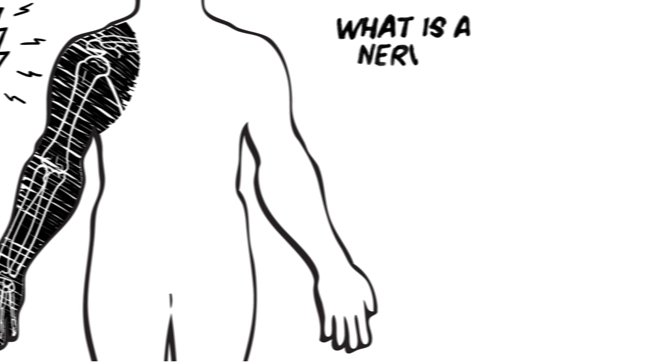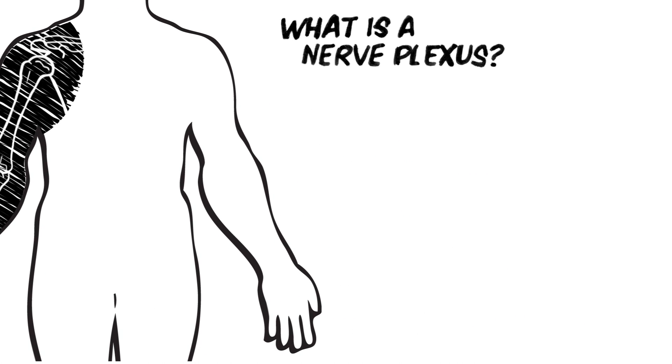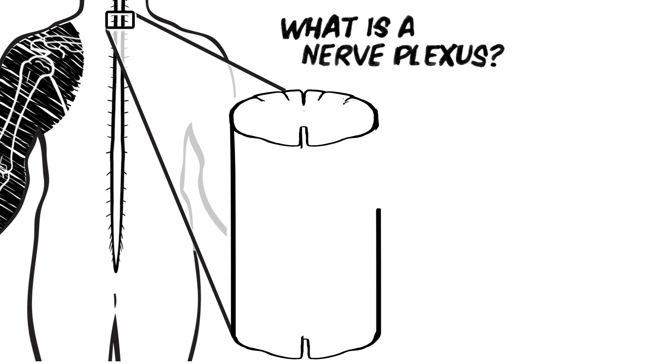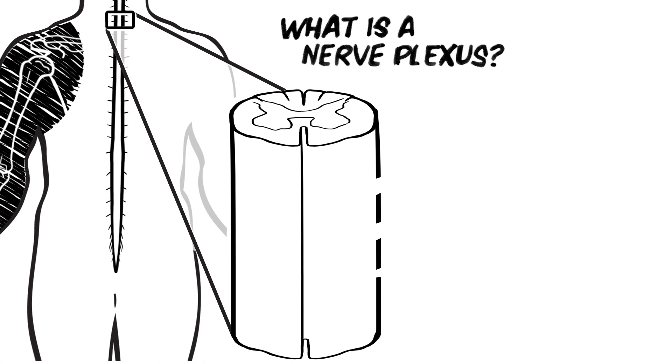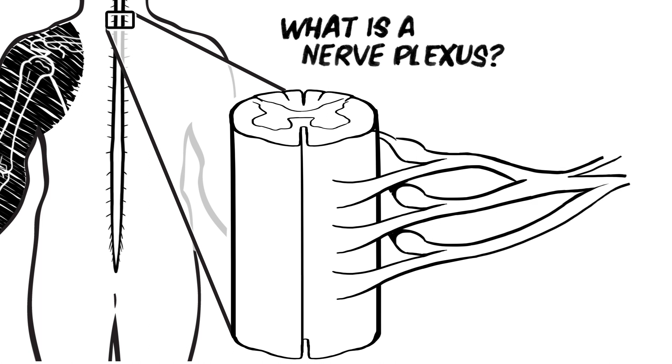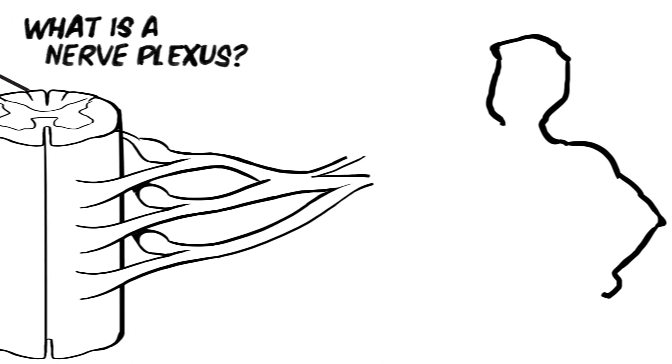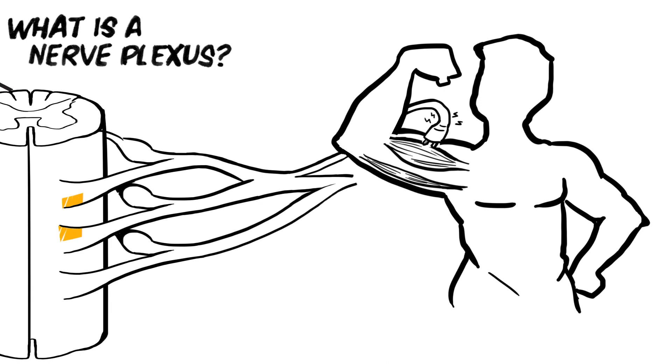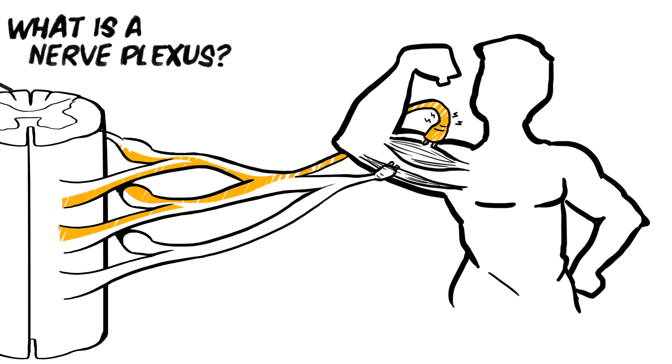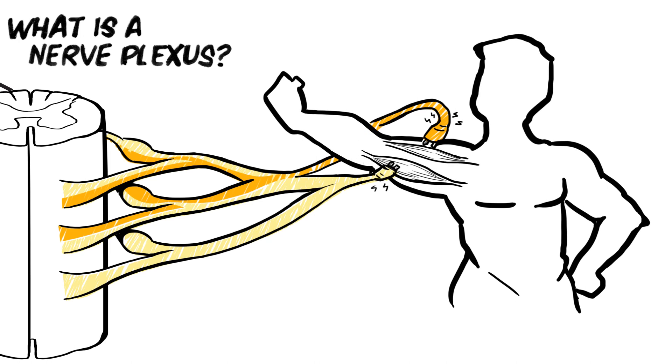Let's begin by defining what a nerve plexus is. A nerve plexus is formed when nerve fibers from two or more spinal segments intermingle and then segregate in order to travel together to a common anatomical region. For example, fibers from two or three spinal segments that are all going to the biceps brachii muscle may join together to form a single nerve bundle that travels to the biceps. Other fibers from these same spinal segments may be destined for the triceps brachii muscle, and they will join together to form a separate nerve bundle that travels to the triceps.